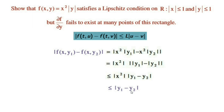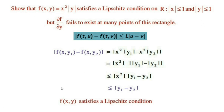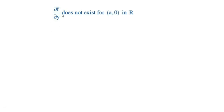This holds for all points in the rectangle region R. Hence we conclude that the function f(x, y) satisfies a Lipschitz condition with Lipschitz constant L = 1. Next, we need to show that ∂f/∂y does not exist for many points in the rectangle region.